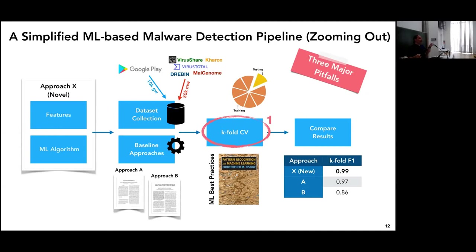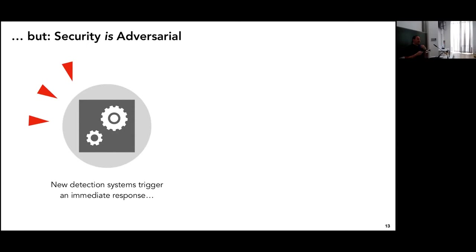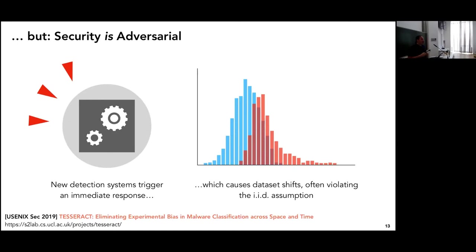There are three pitfalls to be careful about. Not only should you not evaluate only in stationary settings, but you also need to pay attention to how you build your dataset because you might introduce experimental bias. Security is adversarial, so whenever you deploy a new system it will trigger a reaction from attackers that will violate IID assumptions. You cannot just evaluate your system using k-fold cross-validation; you need also to perform a time-aware evaluation to understand how robust your system is in the presence of concept drift.